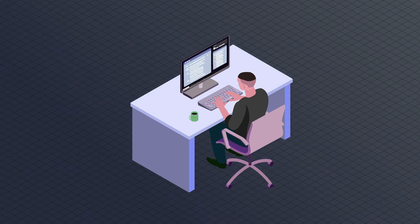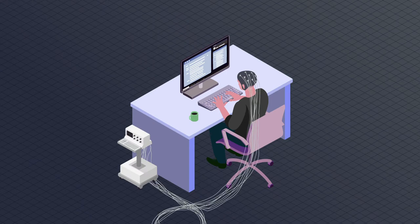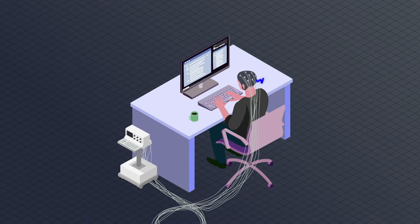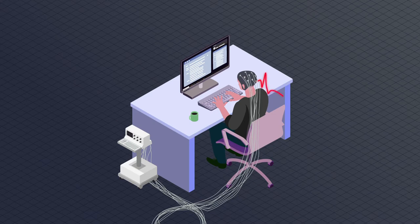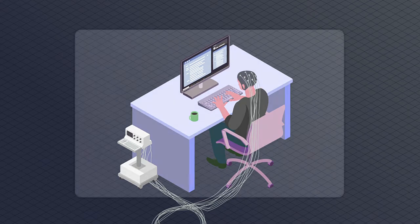We will demonstrate a novel alternative to estimating user preferences: direct measurement of the human brain. Such an approach does not depend on potentially unreliable explicit or implicit behavioral signals. Instead, it only requires the user to perceive content while their brain signals are recorded.